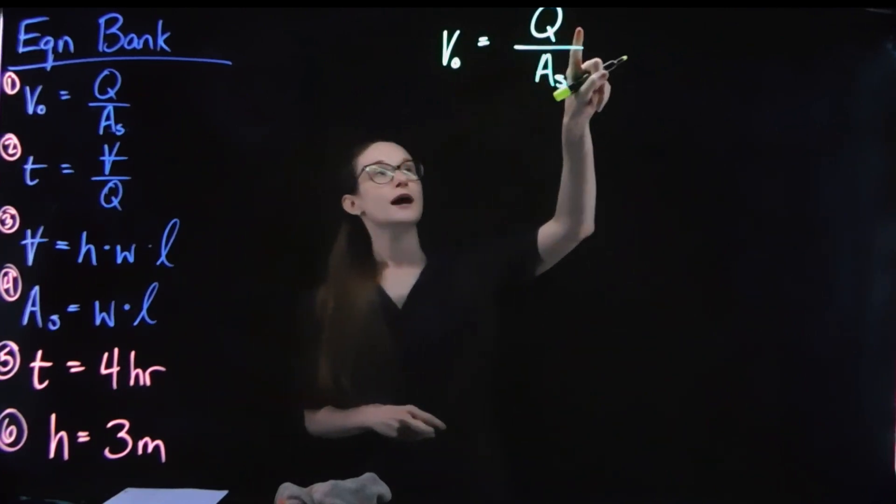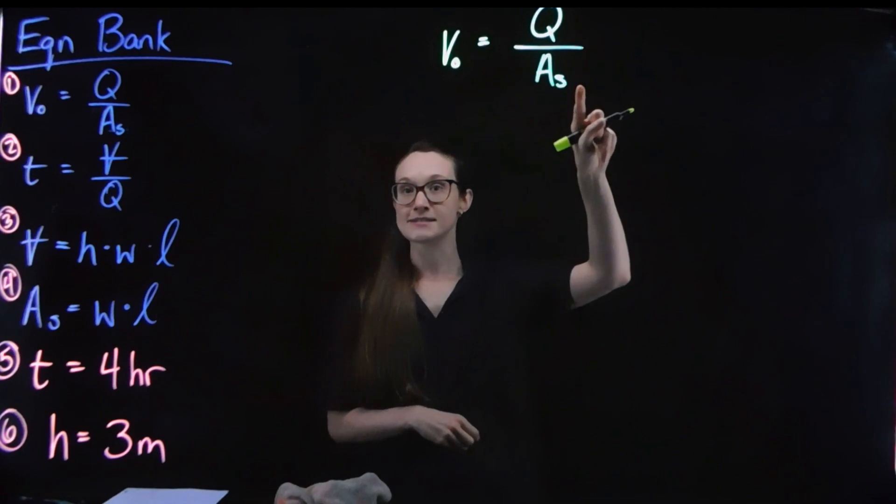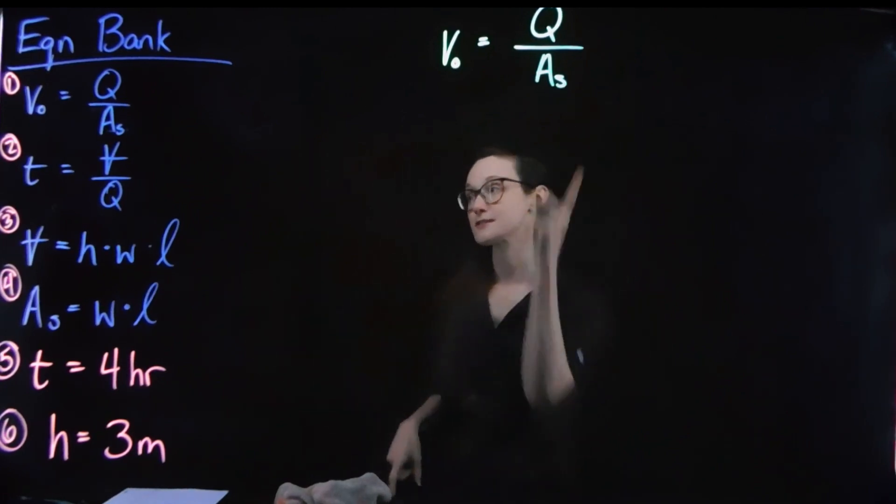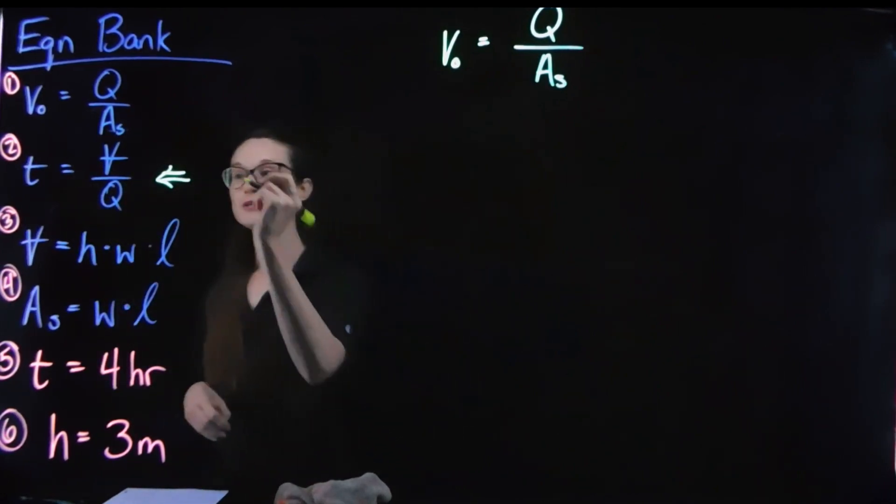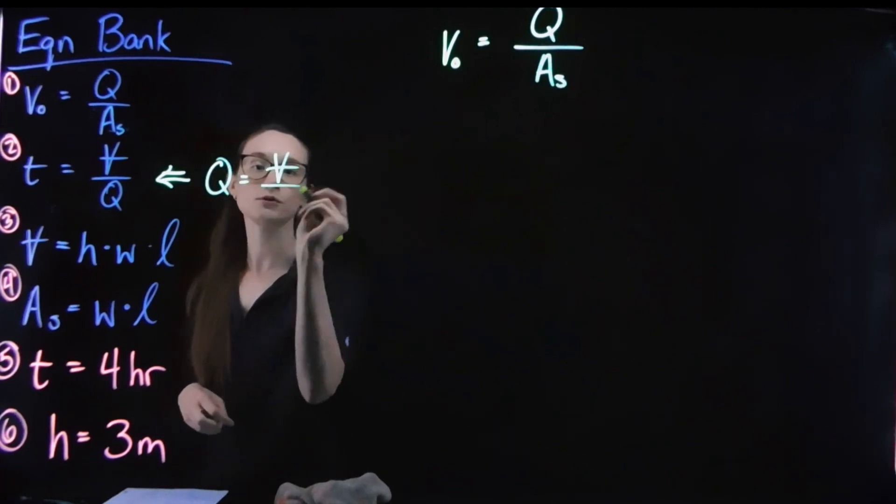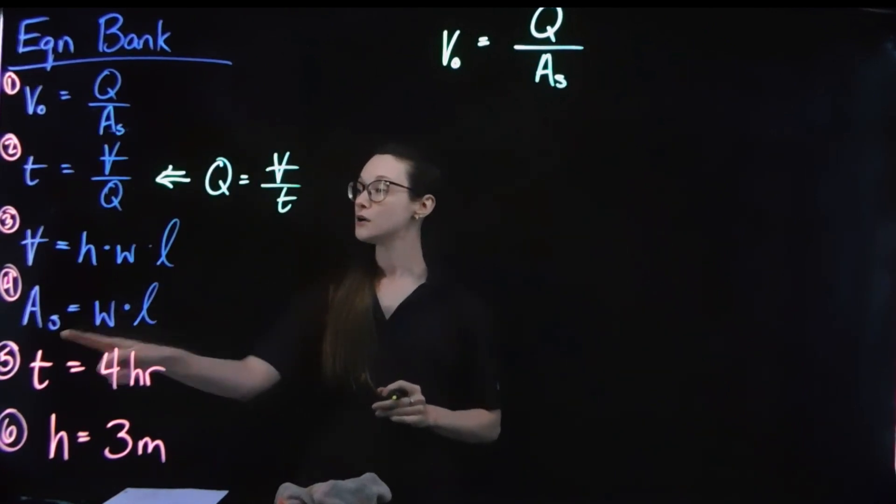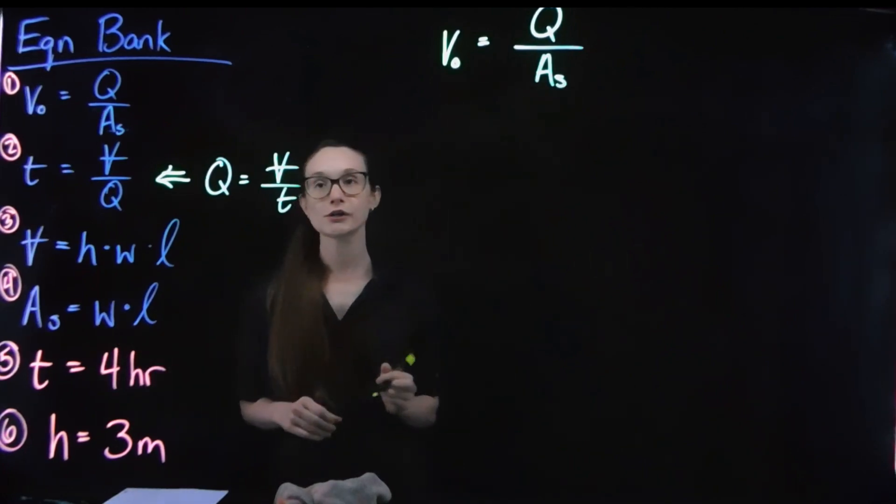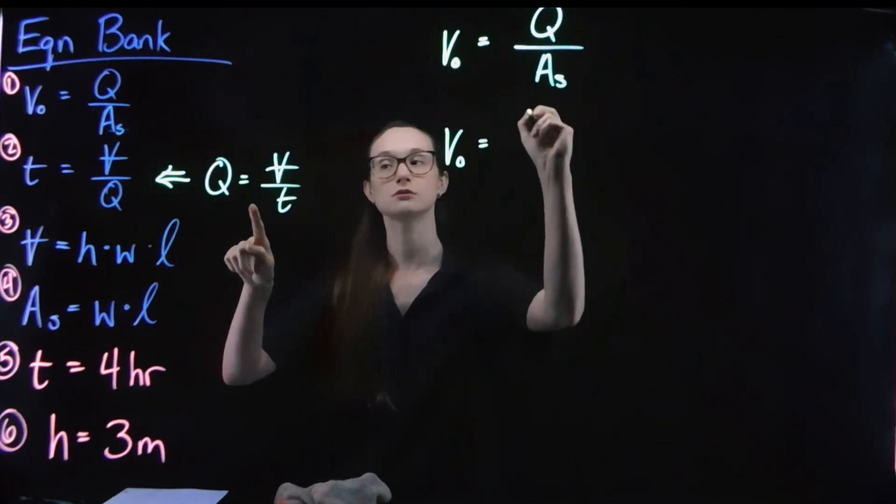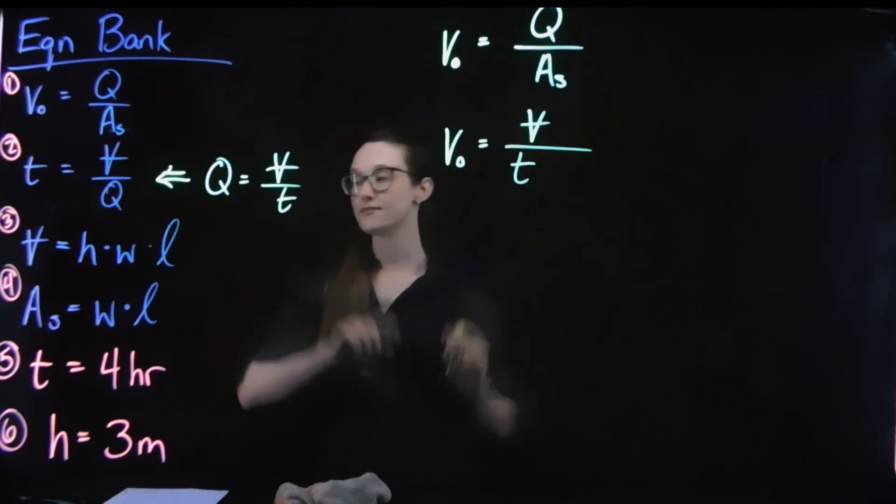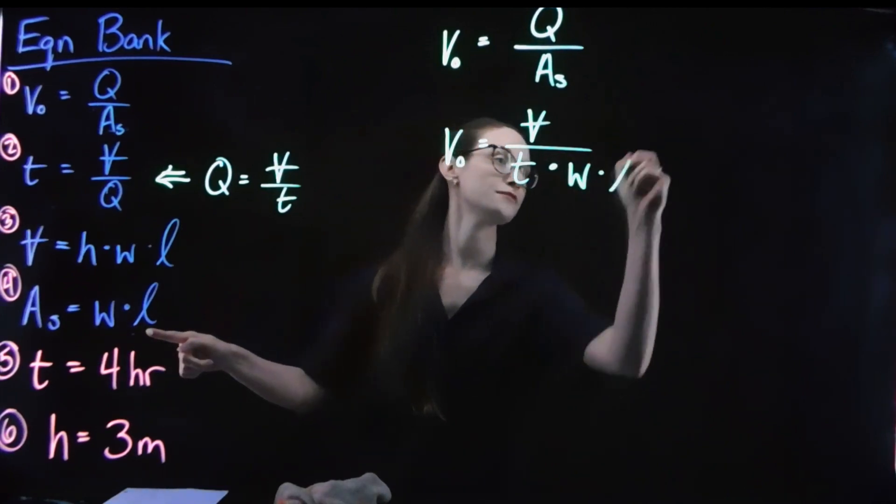So I might say, well, I want to substitute in something for Q, and I want to substitute in something for A sub s. So that would give me three equations. Looking over at my bank of equations, I can rearrange equation number two, which would tell me that Q is actually my volume divided by t, my detention time. And we can look at equation four, which is our equation for surface area. So I'll take equation one and substitute in the rearranged equation two. And then I have equation four that I can substitute in for my surface area term.